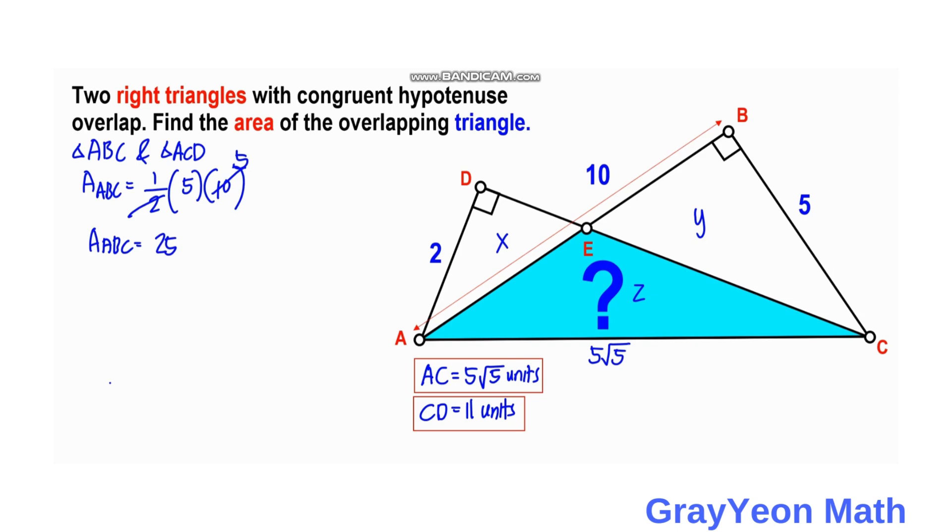For ADC, the area is 1 half times the base, which can be CD, so that is 11, and the height is 2. We can cancel and we have ADC equals 11 square units.